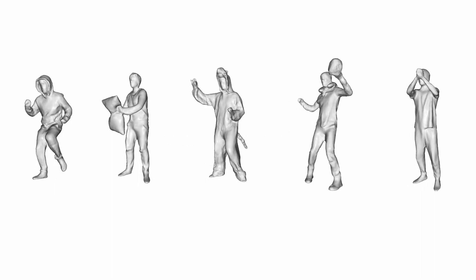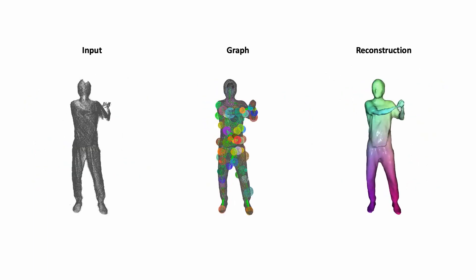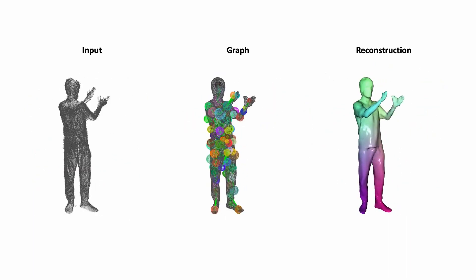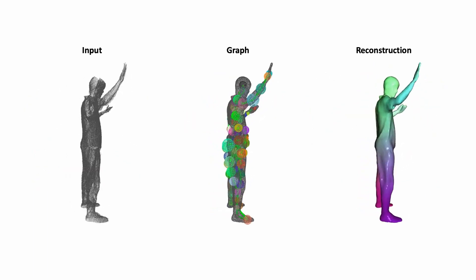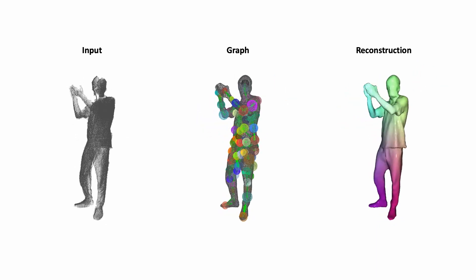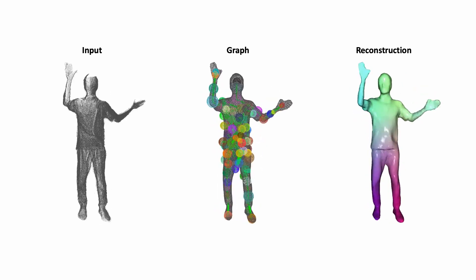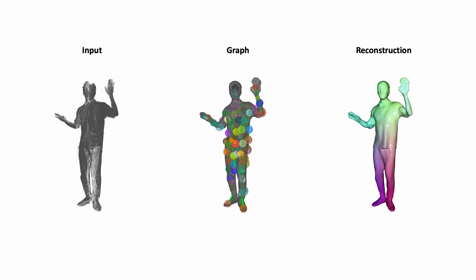In the following, we show results on real data captured with Kinect Azure cameras. We record at the highest resolution setting, which reduces the frame rate to 15 frames per second. Even with this coarse temporal resolution, our method is able to handle fast motions, predicting a consistent graph and a consistent surface.